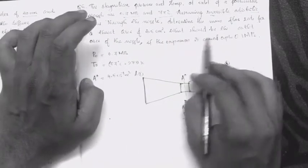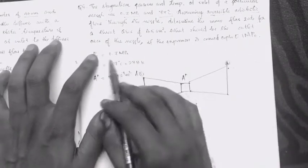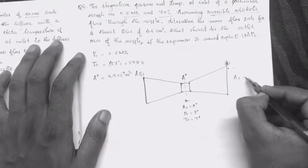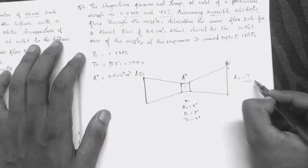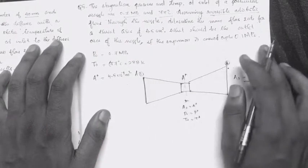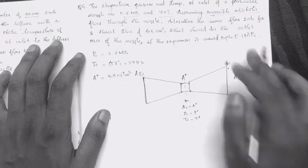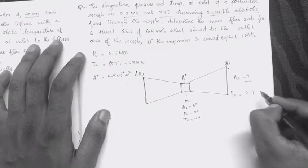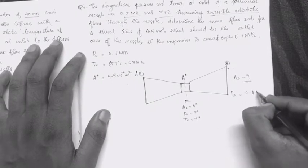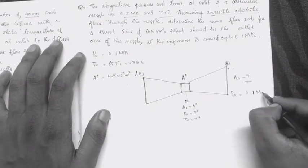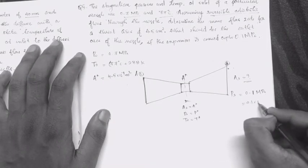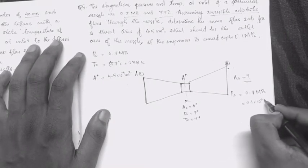We need to find the outlet area A3 of the nozzle, given that the expansion is carried up to an exit pressure P3 equal to 0.1 megapascal. Megapascal can be converted into Pascal by multiplying by 10 to the power of 6.